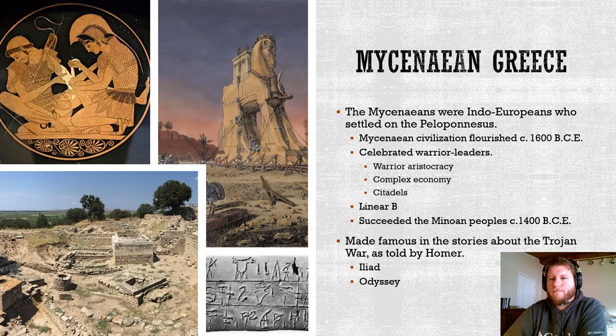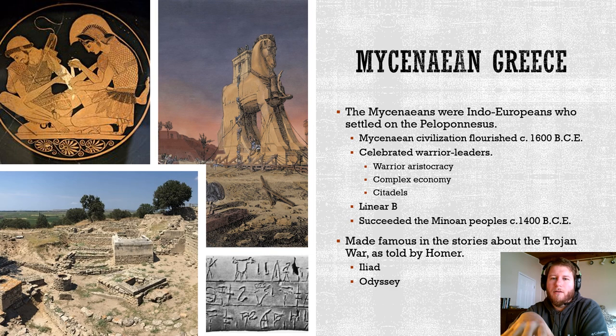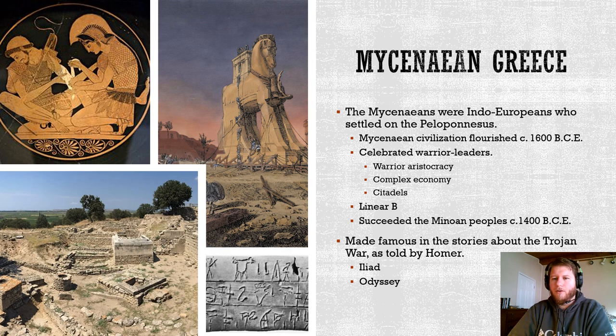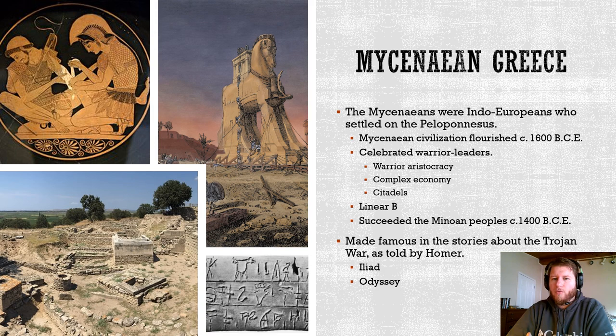This brings us to the Mycenaeans. The Mycenaeans are an Indo-European group of people who came out of the Caucasus mountains region — some went to India and some went to Greece and the upper Balkan areas. They are a little different from the Minoans. They may have even been somewhat responsible for the collapse of the Minoan trade network, having a competing civilization. They are a warrior culture with a warrior aristocracy and warrior leader. They have citadels that are built up, a complex trade and economic system, and their writing — called Linear B — we have been able to decipher and can read.